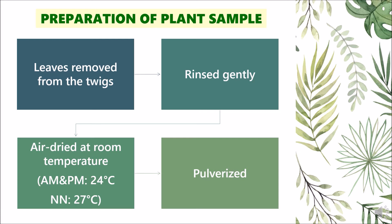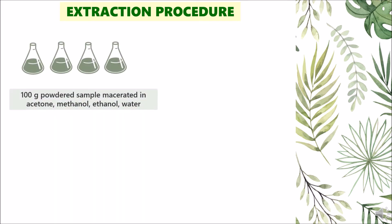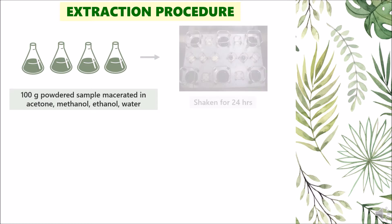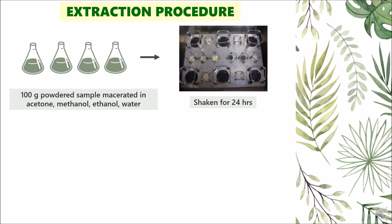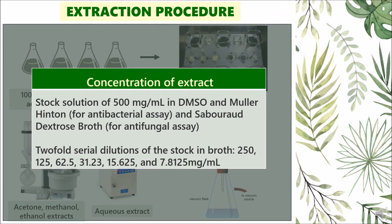The dried leaves were then pulverized. For the extraction procedure, 100 grams of powdered plant sample were extracted by maceration and shaking with acetone, methanol, ethanol, and water for 24 hours. The crude extracts were filtered using a Buchner funnel and Whatman filter paper. The aqueous extract obtained was freeze-dried, while the acetone, methanol, and ethanol extracts were further concentrated and evaporated to dryness in vacuo. A stock solution of 500 mg per ml, initially dissolved in a small amount of DMSO and made up with either Muller-Hinton broth for the antibacterial assay or Sabouraud dextrose broth for the antifungal assay, was prepared.